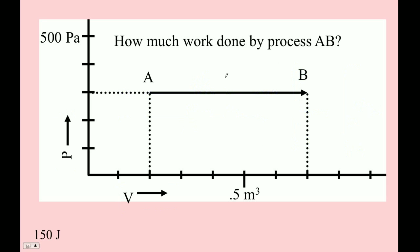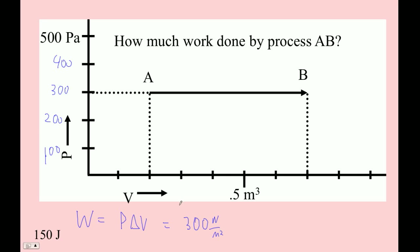How much work is done by the process AB? Work is pressure times change in volume. The pressure is 300 newtons per square meter, and it stays constant. The change in volume is from 0.2 to 0.7, so that's positive 0.5 cubic meters. And sure enough, 300 times 0.5 is 150 joules.